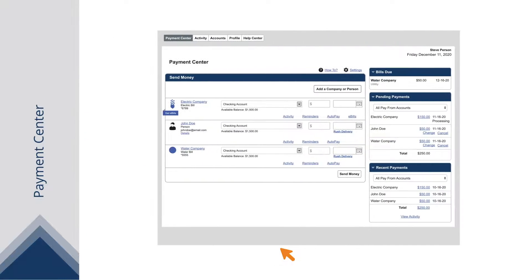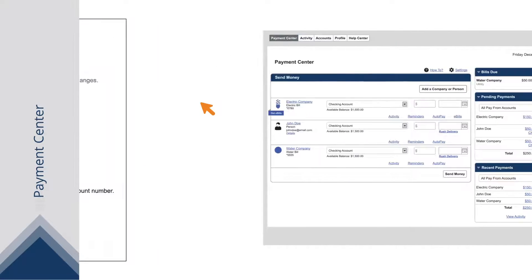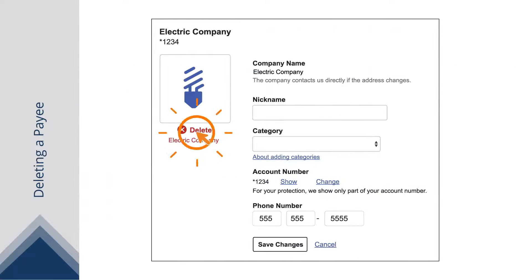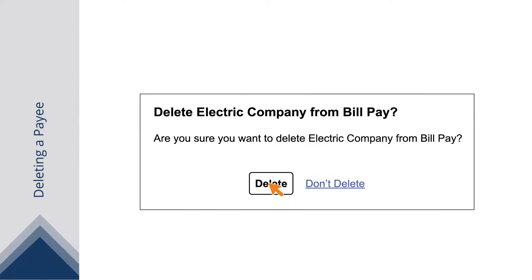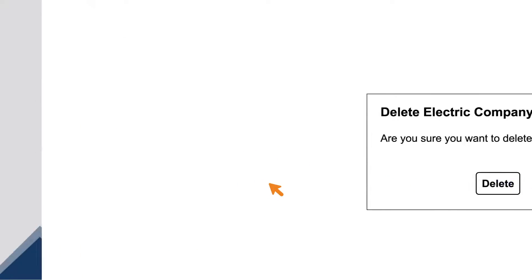To delete a payee, select it and click the Delete link. Then click the Delete button to permanently remove the payee.